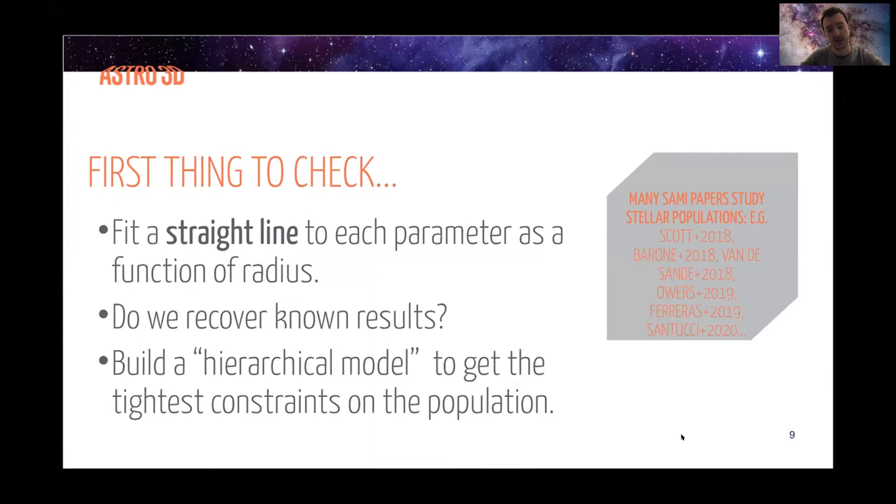But I've also done something a little bit more technical, which is to build something called a hierarchical model. And this allows me to get really tight constraints on the galaxy population as a whole. I haven't really got time to go into too much detail here. But the main idea is that galaxies are generally similar to one another. And so we can use the constraints on the whole population to influence the priors on individual galaxy fits. All the results I'm going to show you come from the hierarchical model. But if I do the simple method, I get very similar results and essentially the same conclusions. So it's not my model giving me the results you're about to see.